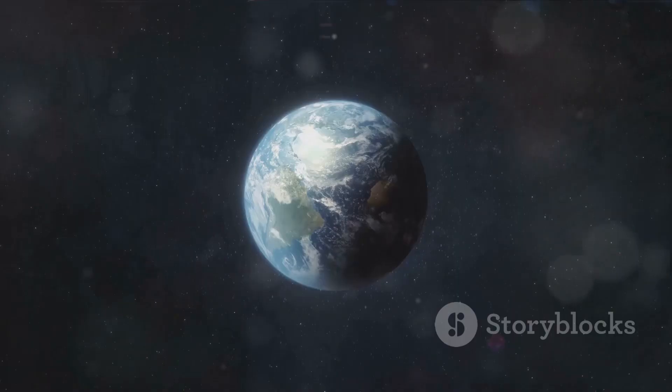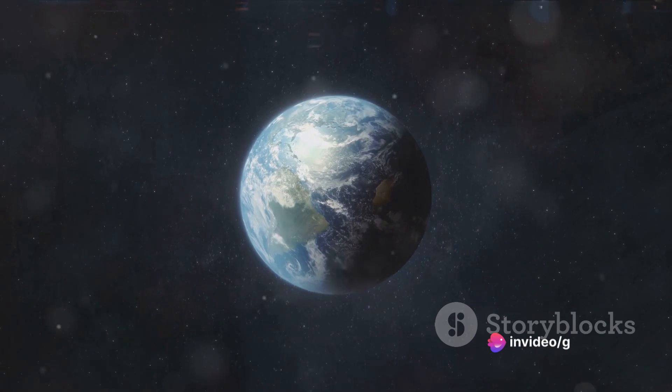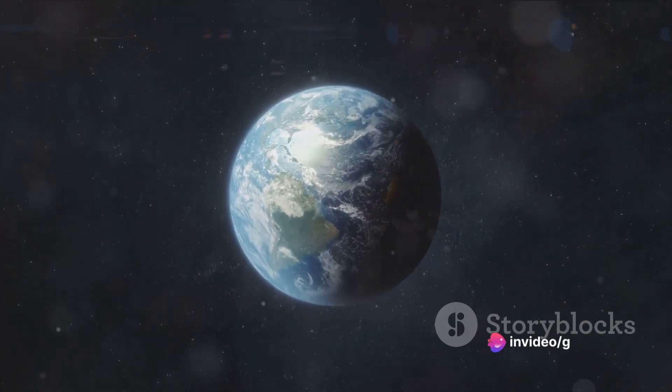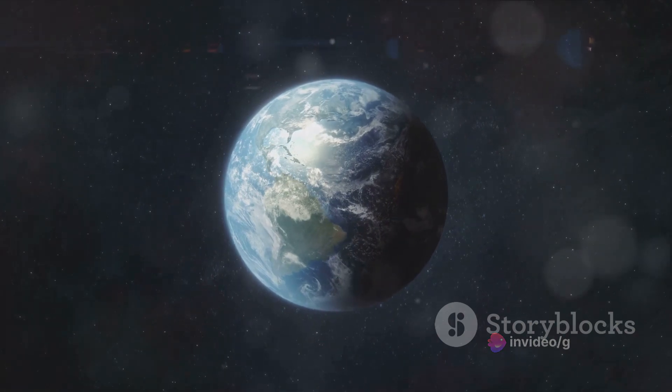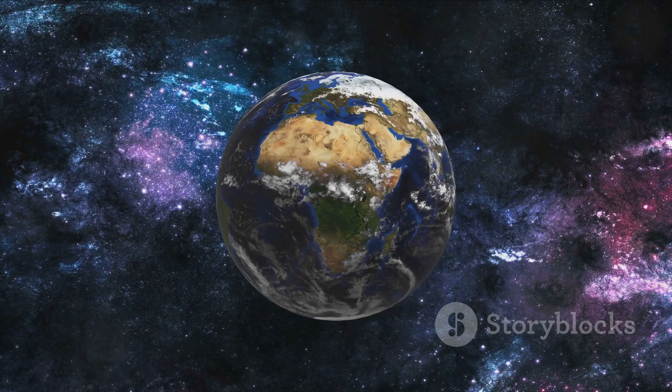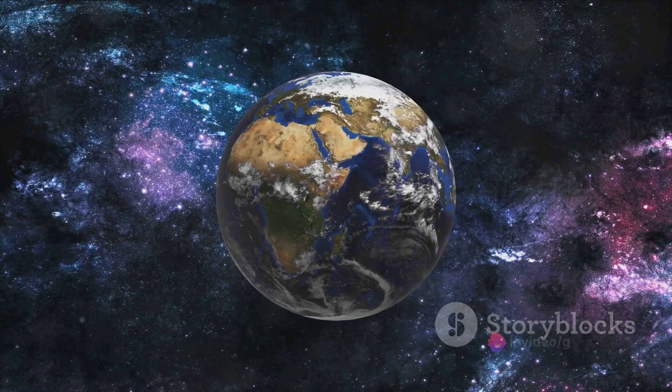These unique conditions, water, the right distance from the sun, a protective atmosphere, came together to make Earth a haven for life. From simple organisms to complex life forms, life on Earth thrived, diversified and evolved over billions of years.